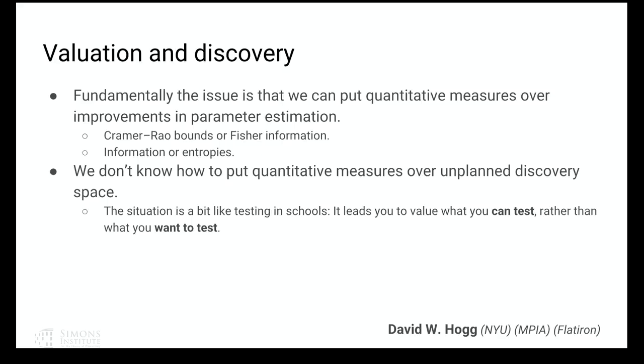When you're doing parameter estimation in a rigid model — like the standard model of particle physics and you want to measure the mass of the Higgs — there's a very well-defined set of things to do, and you know how to say which experiment is better because you can just measure the Fisher information on the Higgs. It is extremely easy to quantitatively say which design gets you the best measurement. But we don't know how to quantitatively say which project gets us the most discovery space. The LHC is designed to have tons of discovery space — it's over-designed for a 125 GeV Higgs — because maybe we'll find new physics.